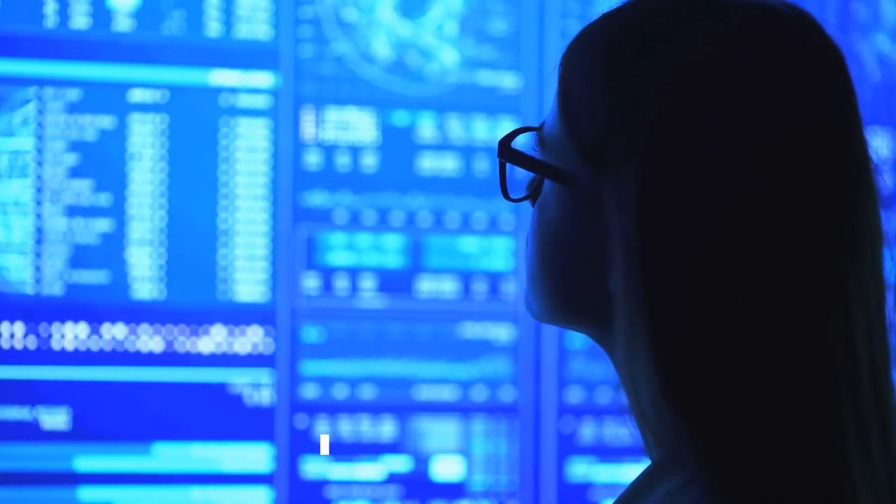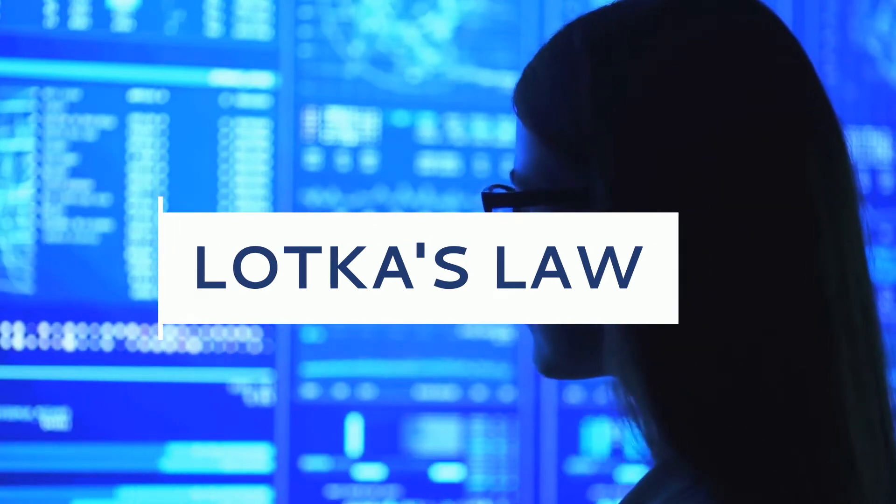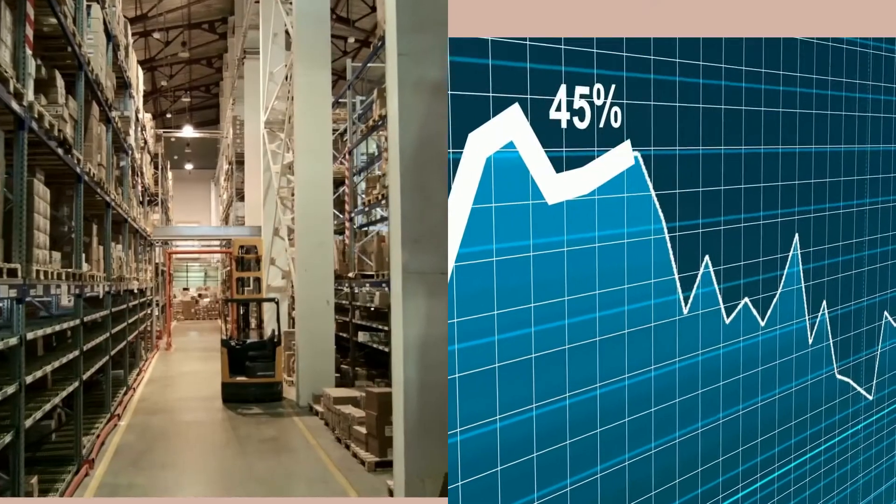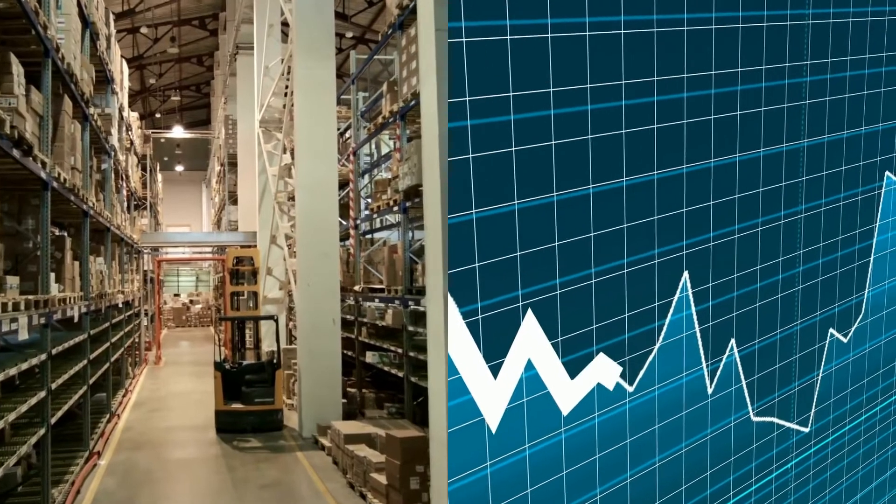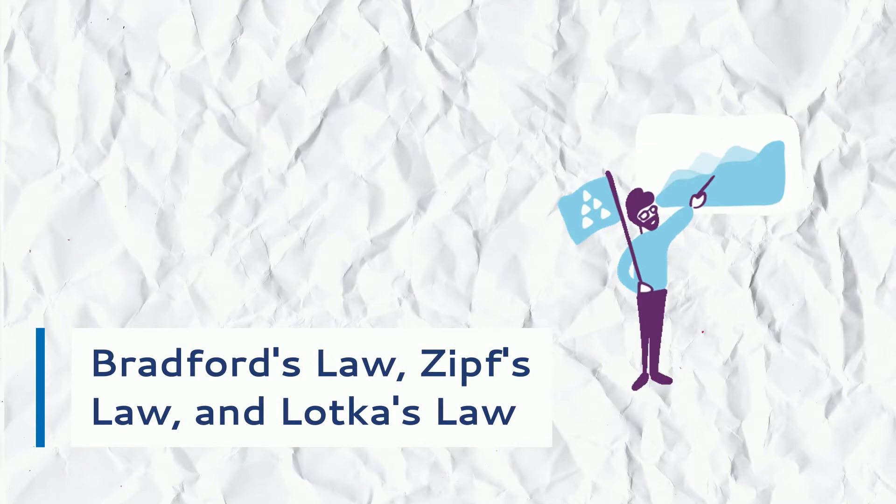Infometrics is the study of quantitative aspects of information. This includes the production, dissemination, and use of all forms of information regardless of its form or origin. The basic laws of infometrics are Bradford's law, Zipf's law, and Lotka's law.